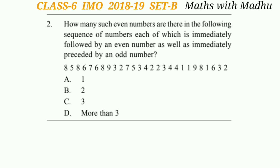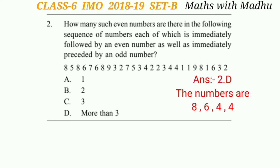How many such even numbers are there in the following sequence of numbers, each of which is immediately followed by an even number as well as immediately preceded by an odd number? We have to find the even number which is immediately followed by an even number and immediately preceded by an odd number. So the numbers are 8, 6, 4, and 4. The correct answer will be option D.